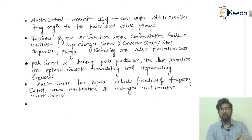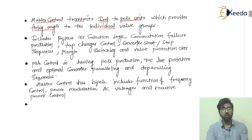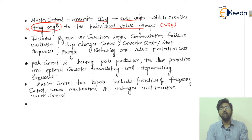The master control transmits the I_ref, the reference current, to the pole units. The pole units provide the firing angle to the individual valve group, which is the VGC — the valve group control. So from pole one and pole two, the signal goes to the VGC, which provides the value of the firing angle alpha.